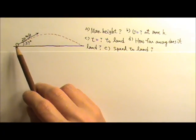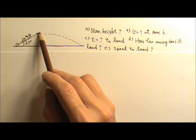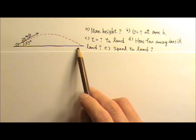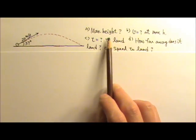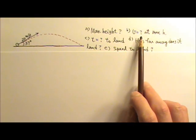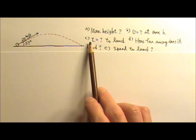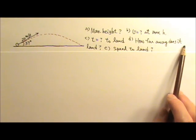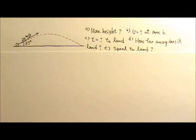Let's try this problem. A ball is kicked at a speed of 20 meters per second at a 37-degree angle above the horizontal on a level field. What maximum height can this ball reach? What is the ball's velocity at that maximum height? How long does it take for the ball to land? How far away does the ball land? And at what speed does the ball land?